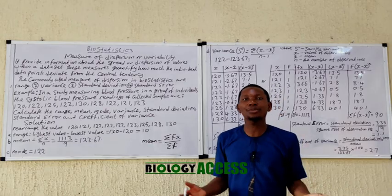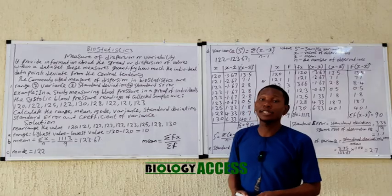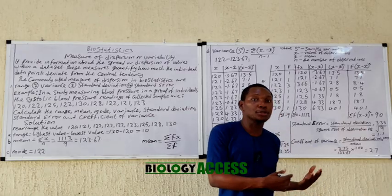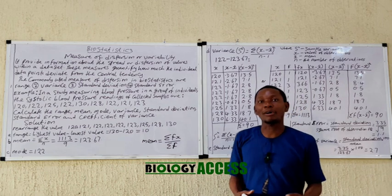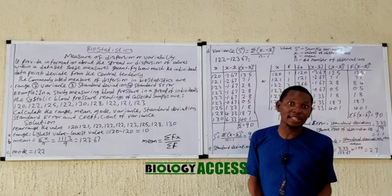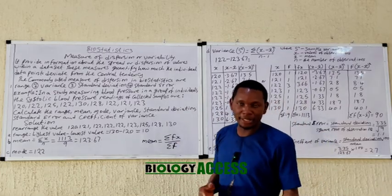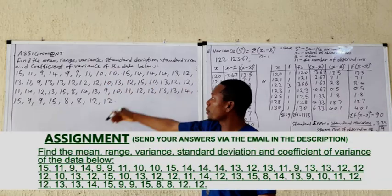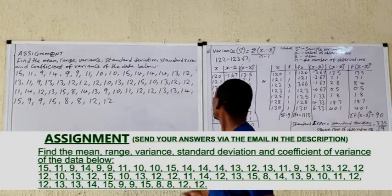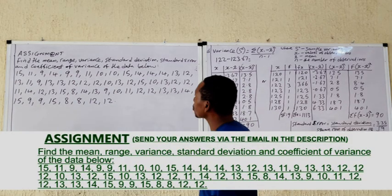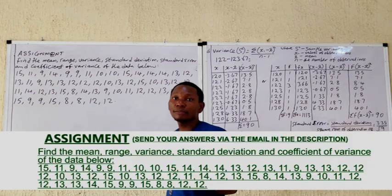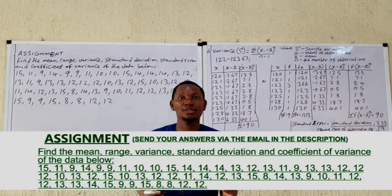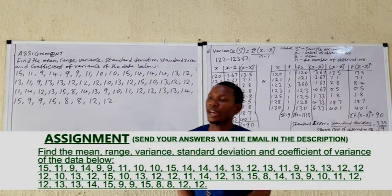The coefficient of variation is calculated using the formula: standard deviation divided by mean, multiplied by 100. Our standard deviation is 3.35 and the mean is 123.67, so 3.35 divided by 123.67 times 100 gives 2.7. This is the foundation you need for understanding measures of dispersion. For questions, comment below or email biology.access@gmail.com. An assignment is provided: find the mean, median, variance, standard deviation, standard error, and coefficient of variation for the given dataset.